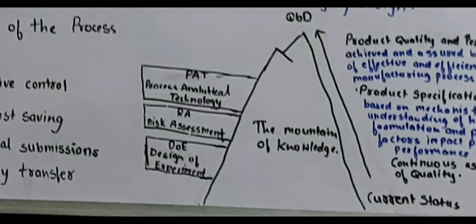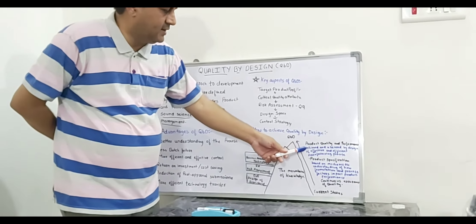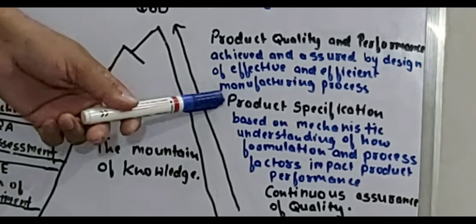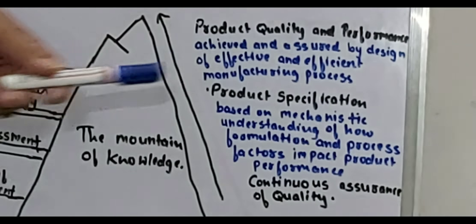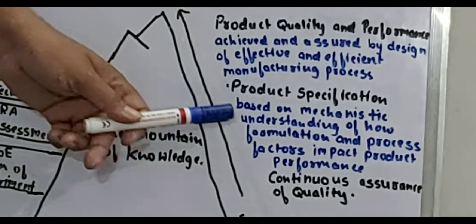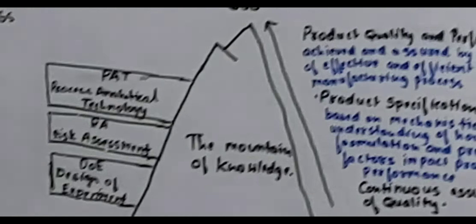Product quality and performance are achieved and assured by design of an effective and efficient manufacturing process. Product specification is based on the mechanistic understanding of how formulation and process factors impact product performance. Finally, there is continuous assurance of quality — quality is a continuous process, that is the continuous assessment or continuous assurance of quality.